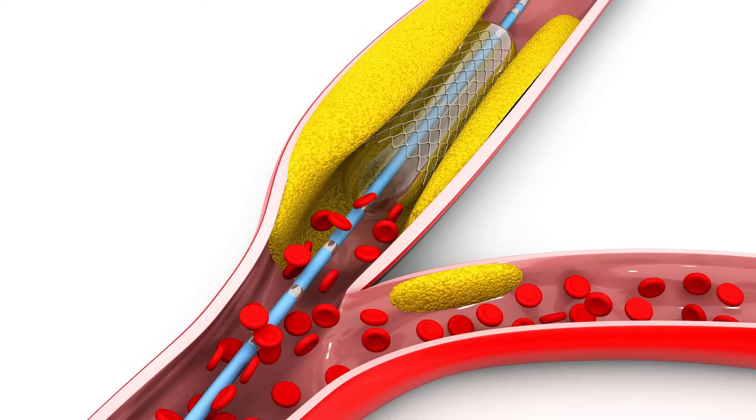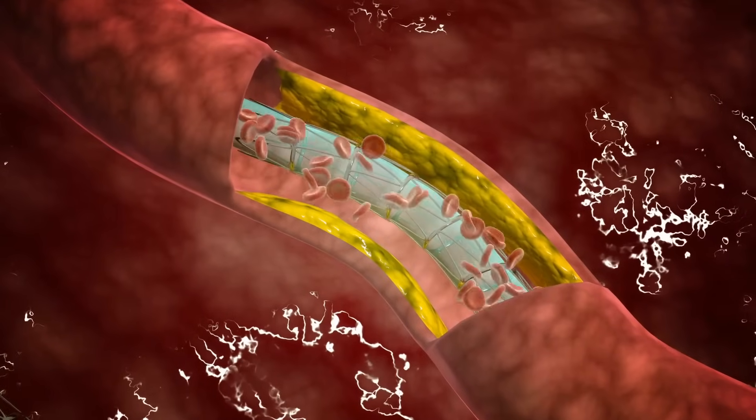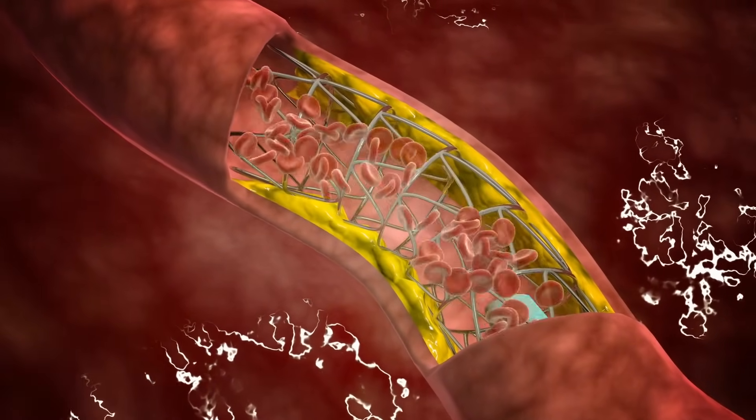Once we have all the information, we have a discussion with the patient to outline what we have found and what the next step should be. This can vary depending on how the patient presented. If they've presented acutely with a heart attack, the next steps may involve using the same catheters from the wrist to advance a wire, balloon, or stent to open the artery or blockage. If we find no significant blockage or narrowing, we may recommend medication, lifestyle changes, optimizing diabetes, blood pressure, cholesterol, stopping smoking, and improving exercise.